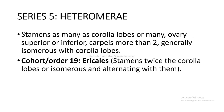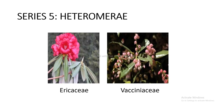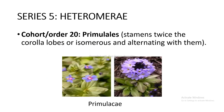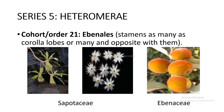Series 5 Heteromerae: stamens as many as corolla lobes or many, ovary superior or inferior, carpels more than two, generally isomerous with corolla lobes. Cohort and order 19 Ericales — stamens twice the corolla lobes or isomerous and alternating with them — includes Ericaceae and Vacciniaceae as shown in the figure. Cohort and order 20 Primulales — stamens twice the corolla lobes or isomerous and alternating with them — includes Primulaceae as shown in the figure. Cohort and order 21 Ebenales — stamens as many as corolla lobes or many and opposite with them — includes Sapotaceae and Ebenaceae as shown in the figure.